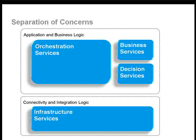One of the aspects of trying to bring together Active Beeple with JBoss ESB and JBoss Rules is to properly define a separation of concern for each respective product. In particular, we have a split between application and business logic, as well as connectivity and integration logic. Within the application and business logic containers, we have orchestration services, business services used by the orchestration services, and decision services. Underlying all that is a set of infrastructure services providing transformation and routing capabilities.